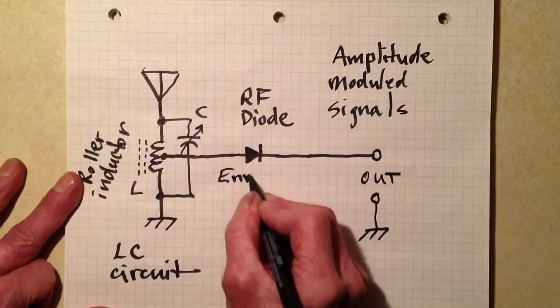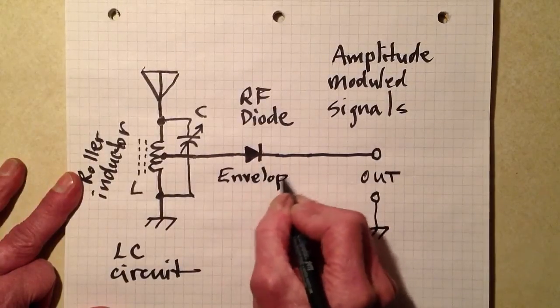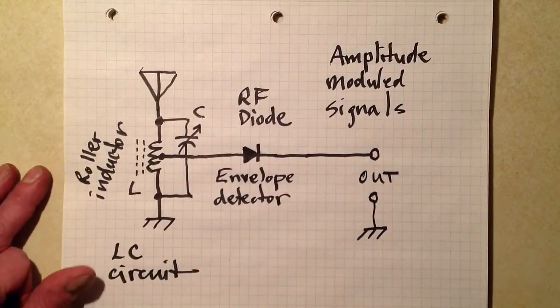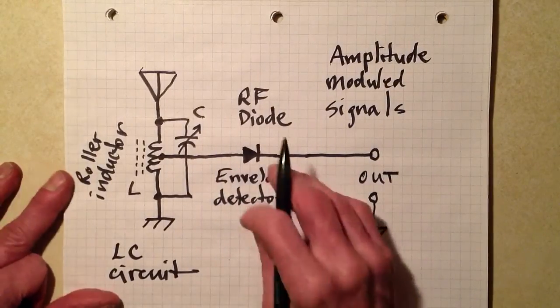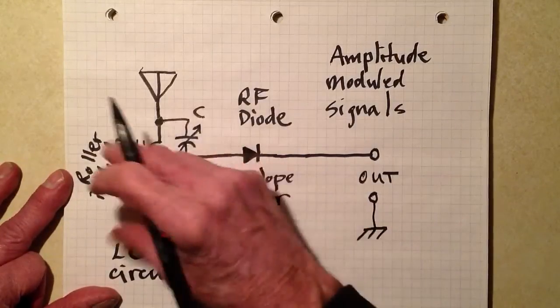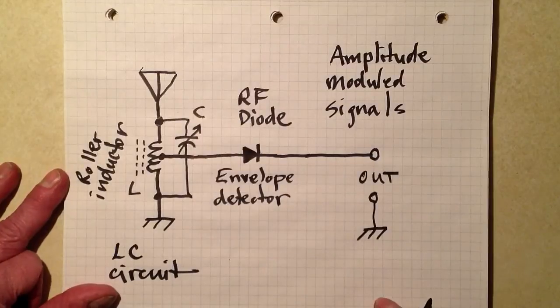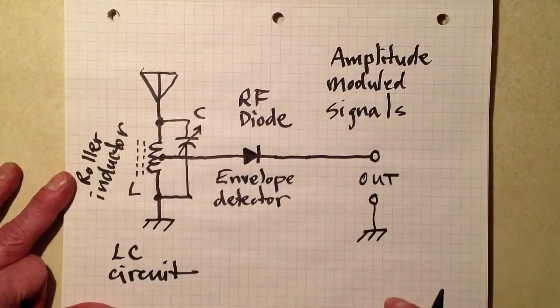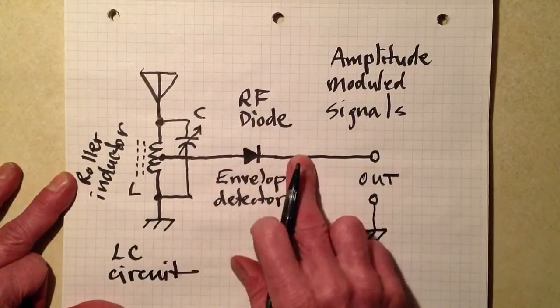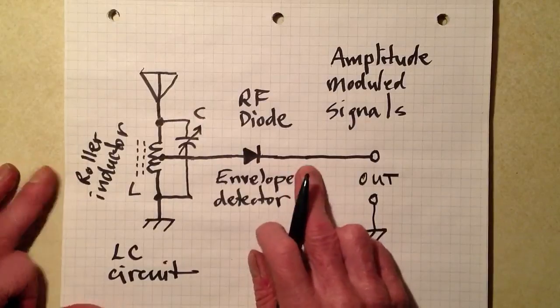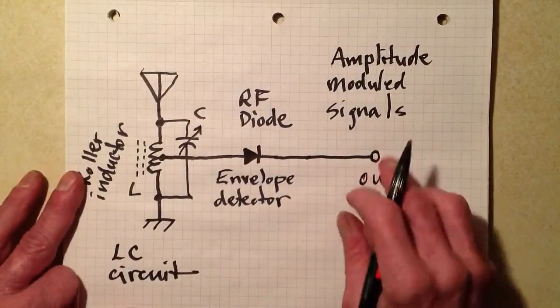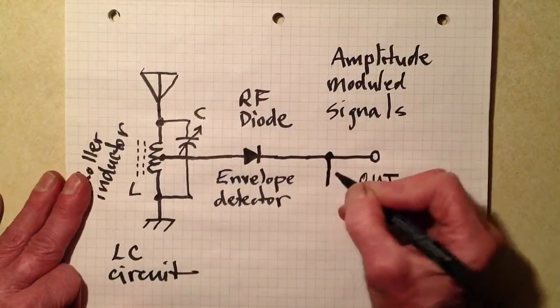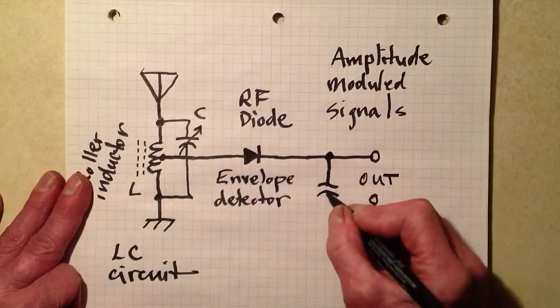And that is known as an envelope detector. Because it detects or demodulates the signal in the radio frequency envelope, which is the way that the radio frequency signal would look if you put it on an oscilloscope. That is the envelope that you will see. This will rectify that, in effect, at the high frequency, leaving only the audio components here.